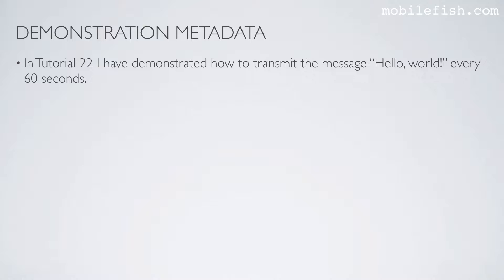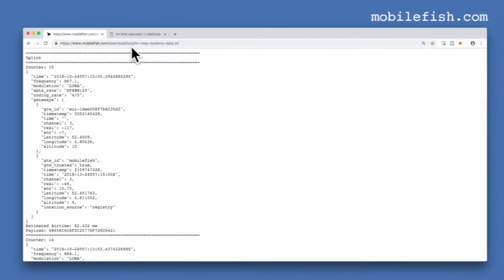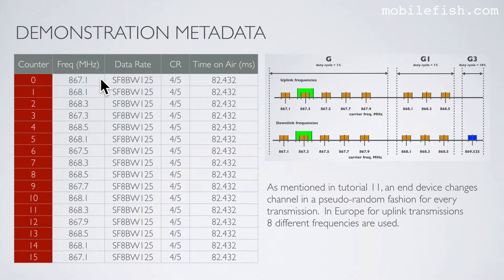In tutorial 22 I demonstrated how to transmit the message Hello World every 60 seconds. The metadata displayed in the Things Network console during the demonstration can be found at this location. The relevant metadata — such as frequency and data rate — can be found in this table. As mentioned in tutorial 11, an end device changes channel in a pseudo-random fashion for every transmission. In Europe, for uplink transmissions, 8 different frequencies are used.